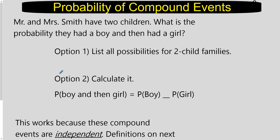We're going to continue talking about probability. Today we're going to focus on the probability of compound events, meaning we're talking about the probability of more than one thing occurring rather than just one thing at a time. For example, Mr. and Mrs. Smith have two children. What is the probability they had a boy and then had a girl?